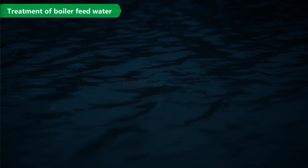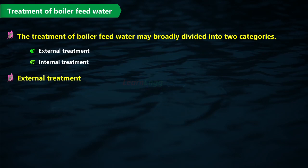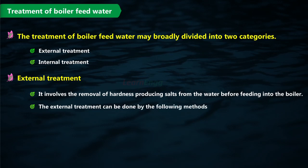The treatment of boiler feed water may be broadly divided into two categories: external treatment and internal treatment. In this video, we will look at the external treatment of boiler feed water. External treatment involves the removal of hardness-producing salts from the water before feeding it into the boiler, and can be done by the following methods.